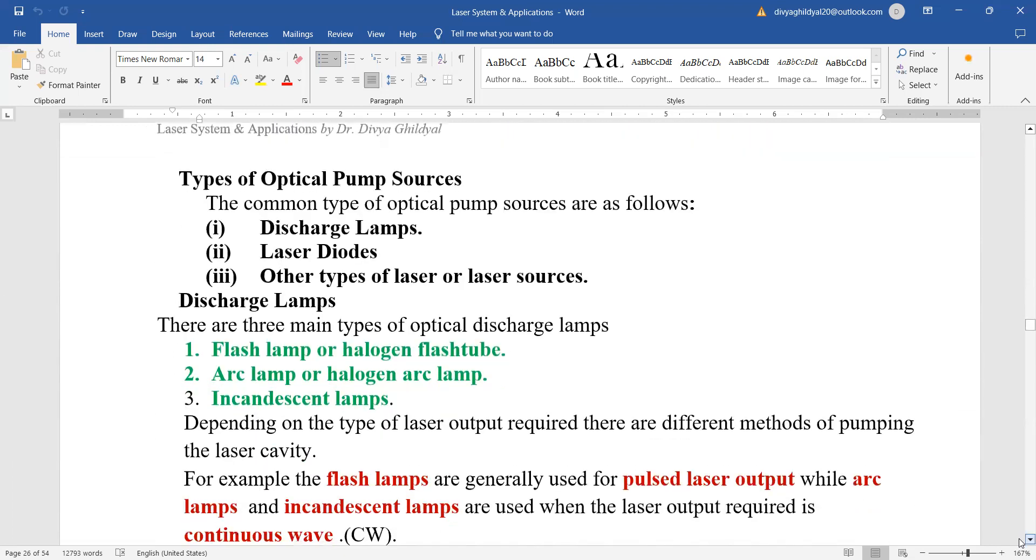Types of optical pump sources are the discharge lamp, laser diodes and other few types of lasers. Discharge lamp, there are three main types of optical discharge lamps, the flash lamp or the halogen flash tube, arc lamp or halogen arc lamp, incandescent lamps.